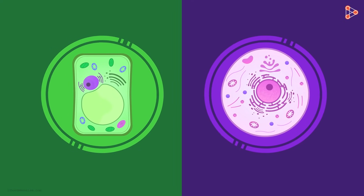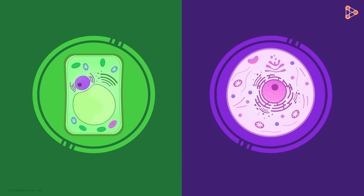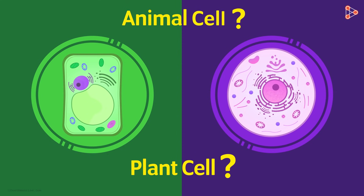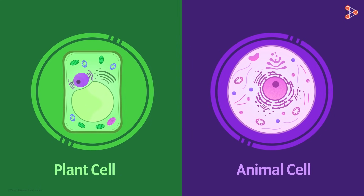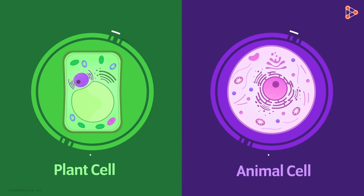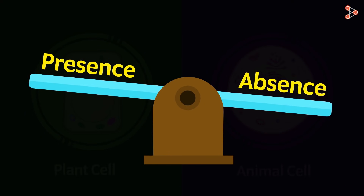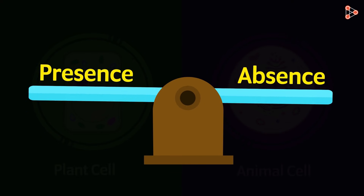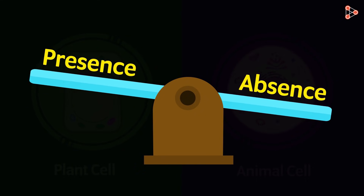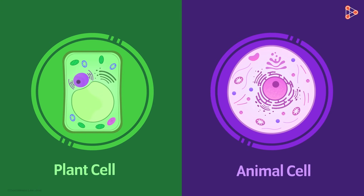Here are two cells on your screen. Can you tell me which one is a plant cell and which is an animal cell by merely glancing at them? Don't worry, it's not that difficult. Plant and animal cells can be distinguished from each other by merely looking at them. The presence and absence of a few characters are enough to let us know the differences. Let's go through the differences one by one.